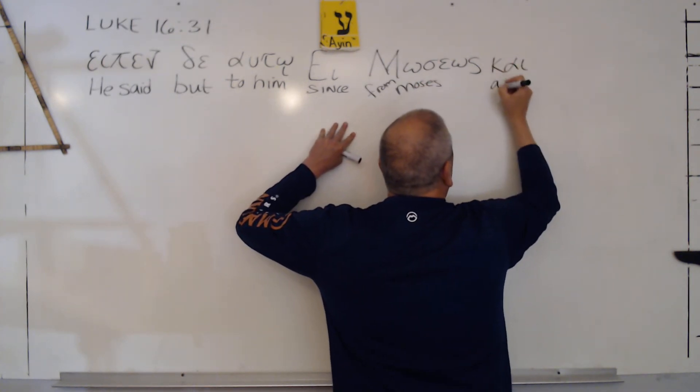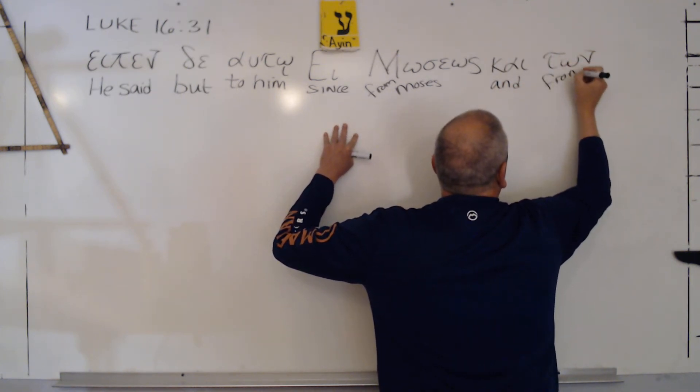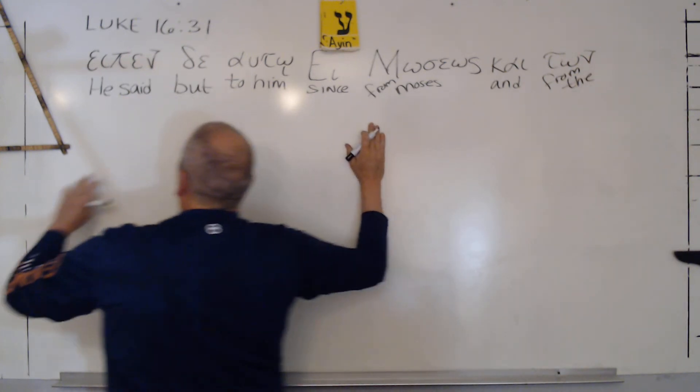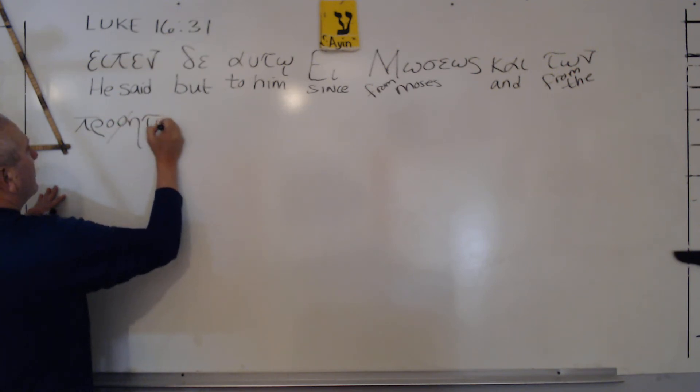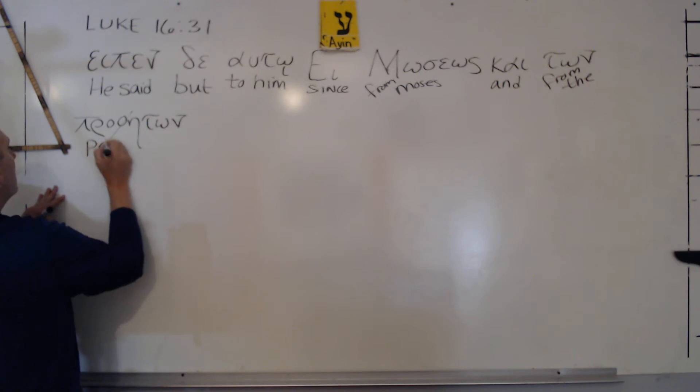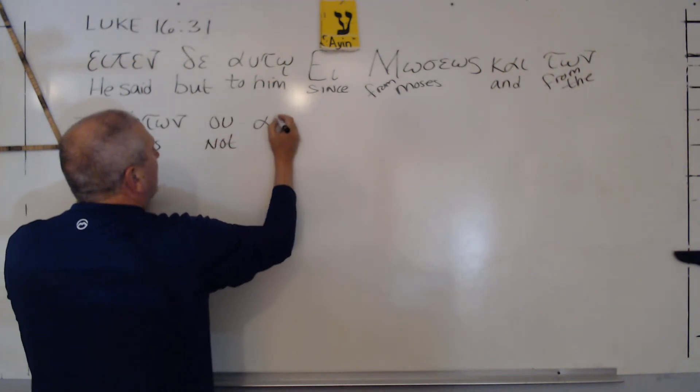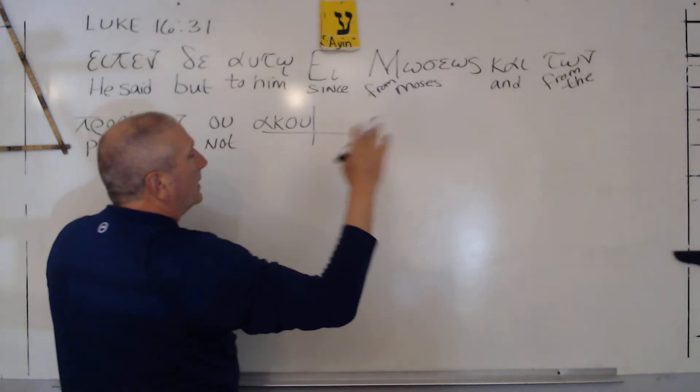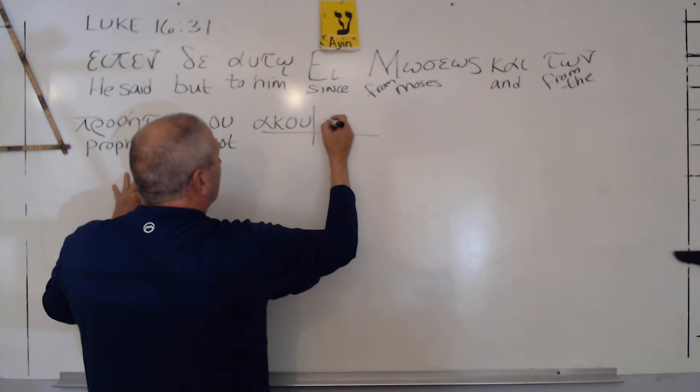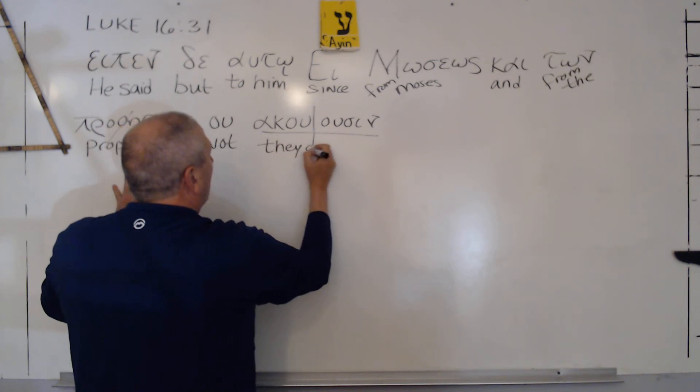Kai, and Tone from the prophets, Prophetone from the prophets. Then Aku, there it is, Aku from Aku-O, and then we have our present active ending, our primary active ending, that is, usin, usin, usin with a removable knee, so they are hearing.